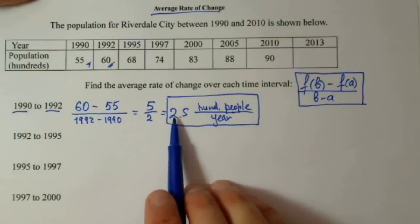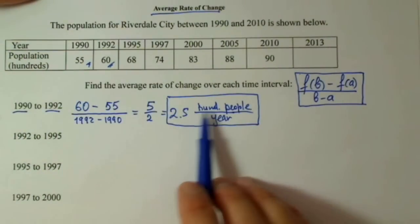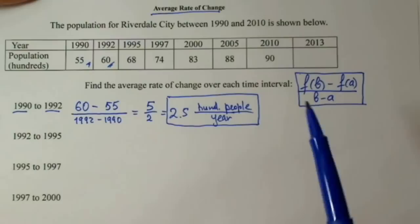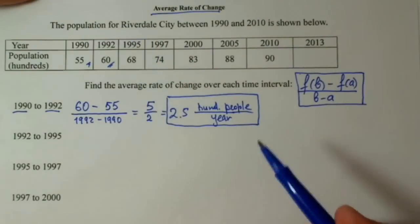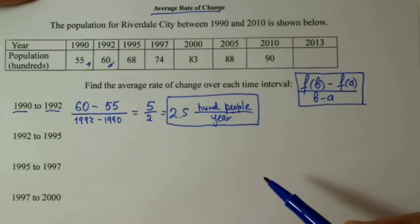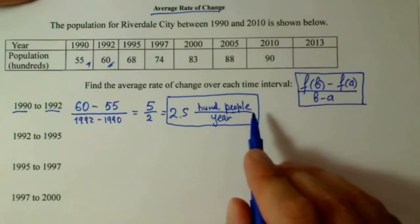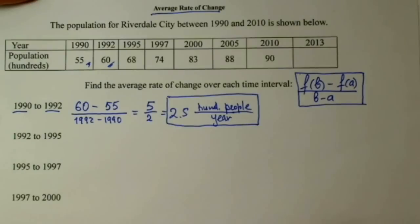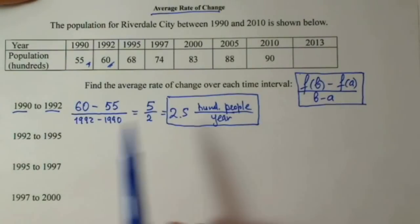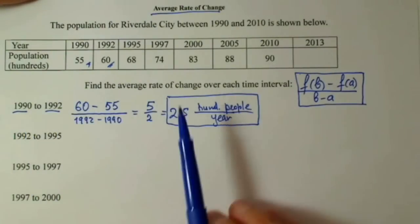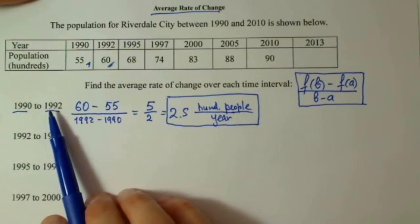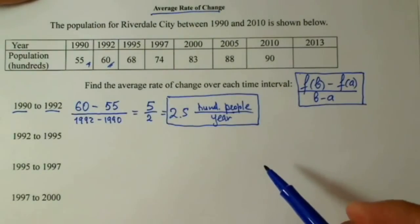What does this mean? 2.5 hundreds of people per year means that the population in Riverdale City was increasing on average by 2.5 hundreds of people per year — so population increased in 1991 by 2.5 hundreds of people, and in 1992 it again increased by that amount.